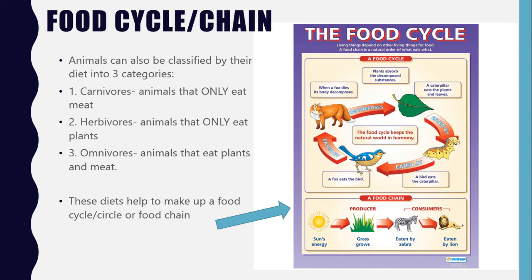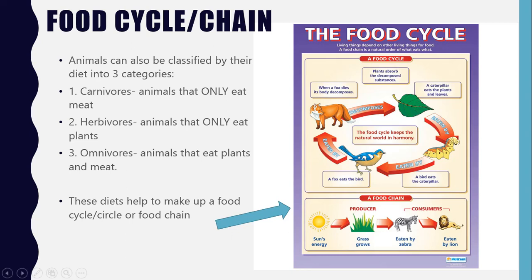These diets help make up a food cycle or food chain. If we start at a leaf, the caterpillar eats the leaf. Then the caterpillar is just hanging out on the tree, minding its own business, munching away, and then suddenly a bird swoops in and eats the caterpillar. The bird is happy and full, but then it gets eaten by a fox, because foxes are also very hungry and foxes eat birds. And then when the fox dies, its body decomposes into the soil, giving the plant nutrients, which is what they need to grow. So then the cycle starts again.